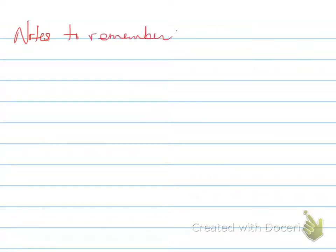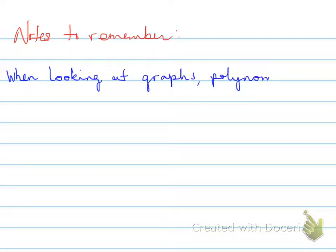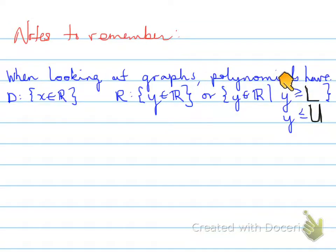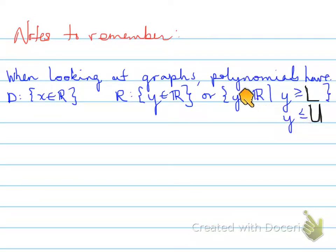Notes to remember. When looking at graphs, polynomials have the same domain for all of them. The range is y belongs to real if it's an odd degree function, or it has an upper or lower bound if it's an even degree function. The L and U represent the lower and upper bounds — y is either greater than or equal to the lowest bound, or less than or equal to the upper bound. For example, quadratics have either a lower or upper bound, whereas linear and cubic functions have a full real range.